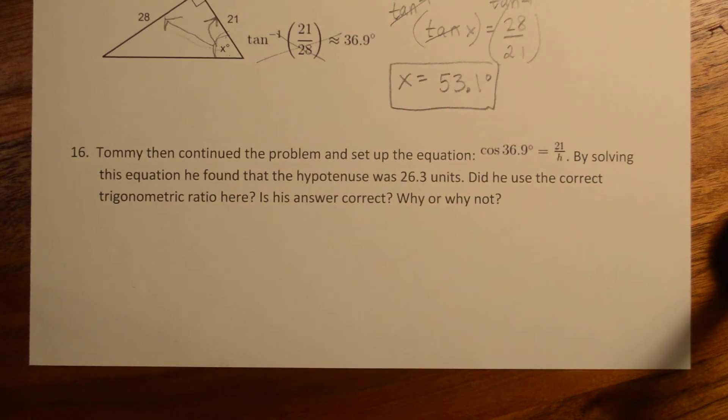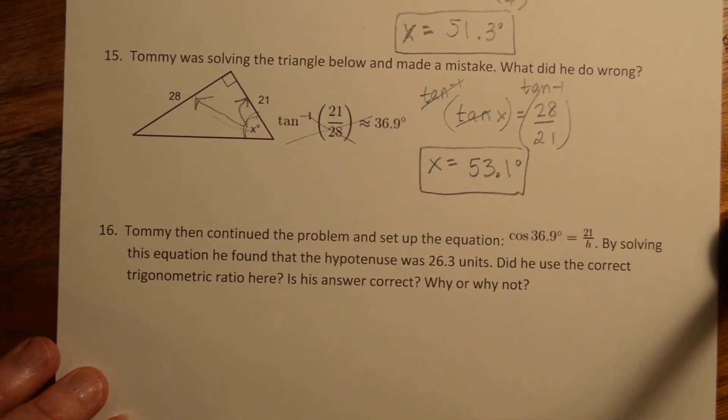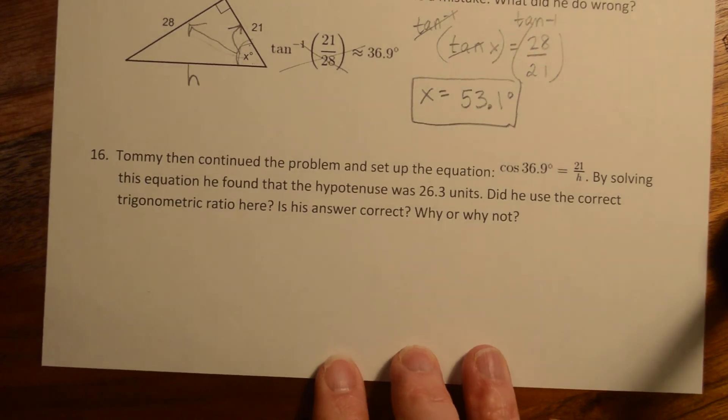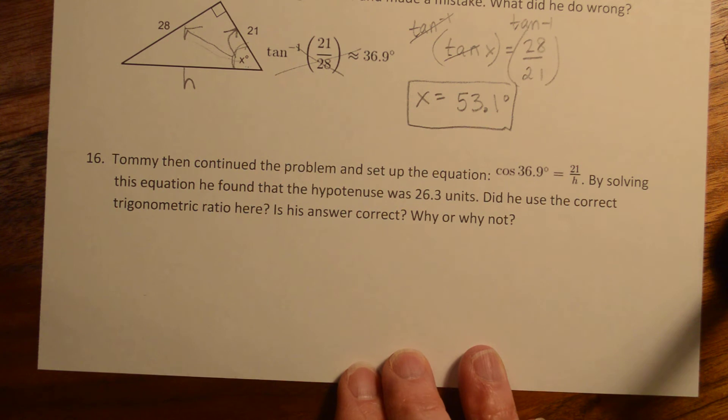Tommy then continued the problem and set up the equation cosine of 36.9 degrees is 21 over hypotenuse. Now let's go back to his picture because this one depends on it.